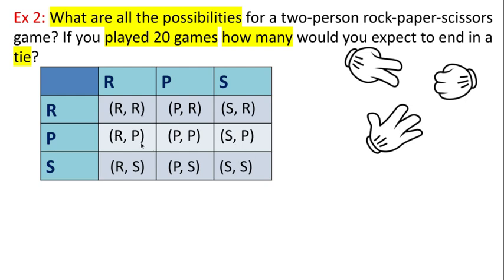There are one, two, three, four, five, six, seven, eight, nine different possibilities, nine possible outcomes.